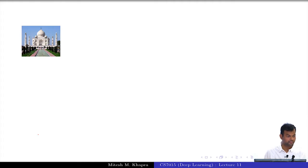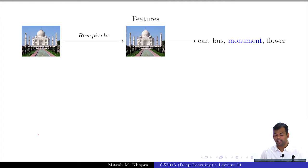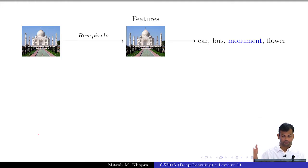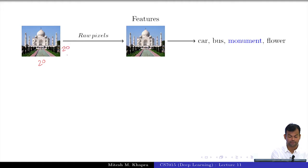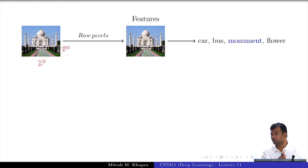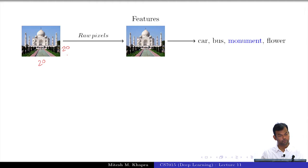The task is: you are given an image and you want to classify it into one of K categories. I am considering four categories here — car, bus, monument, and flower. What is the simplest thing you can do? Suppose this is a 20×20 image. The simplest thing is to just take this as a 400-dimensional input feature vector and treat it as a four-class classification problem, then train some multi-class SVM or similar classifier on that.